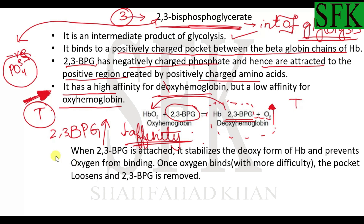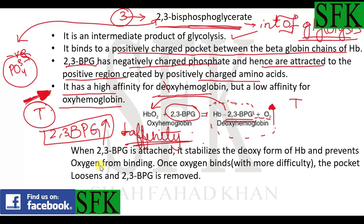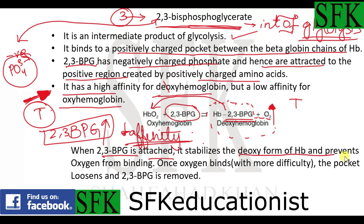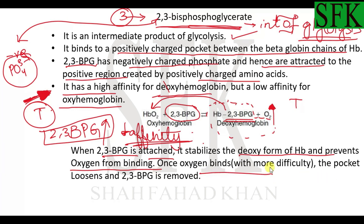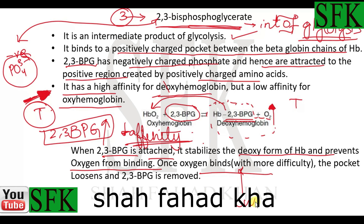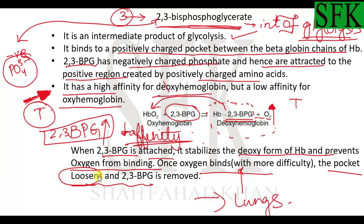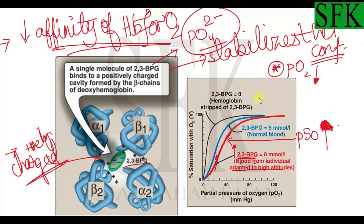2,3-BPG at high altitudes increases in concentration in order to reduce the affinity of hemoglobin for oxygen. When 2,3-BPG is attached, it stabilizes the deoxy form of hemoglobin and prevents oxygen from binding. Once oxygen does bind in the lungs — with great difficulty — the pocket loosens and is no longer firmly attached to 2,3-BPG, so 2,3-BPG detaches. Oxyhemoglobin then forms with a high affinity for oxygen, but as long as 2,3-BPG is attached, hemoglobin will have a low affinity for oxygen.